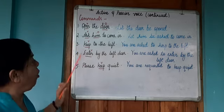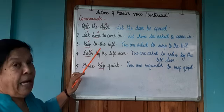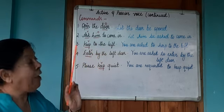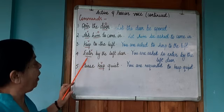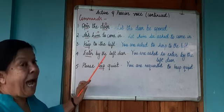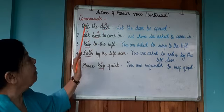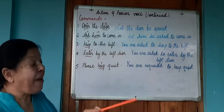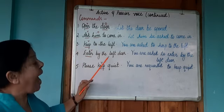In sentence 3 and 4, we have 'keep to the left.' Now, 'keep' is your verb. Keep where? In which direction? 'To the left' is an adverb phrase. Therefore, here I don't have an object. 'Enter by the left door' — again, 'enter' is the verb. How are you to enter? By the left door. Therefore, here we don't have objects. To get the object, I ask the question 'what?' Open what? Open the door. Enter what? I don't get the answer. Keep what? I don't get the answer. So in sentence 3 and sentence 4, we find that we don't have objects.